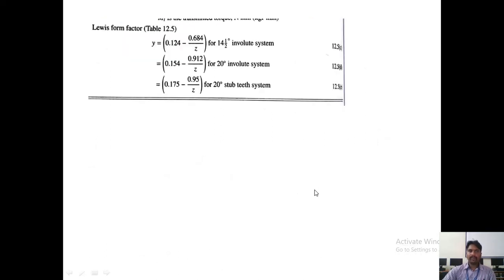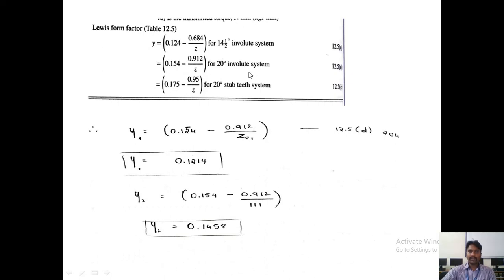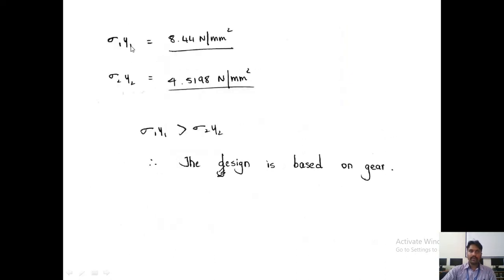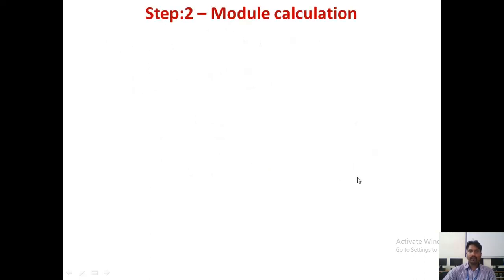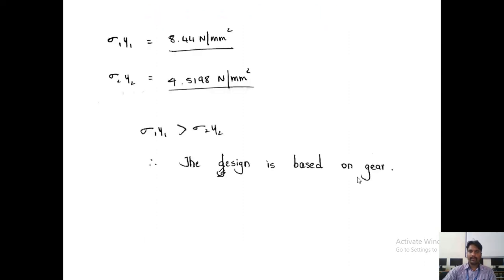Calculate the Lewis form factor using the 20-degree full depth equation: Y = 0.154 − 0.912/Z_e, where Z_e is the equivalent number of teeth. Calculate Y1 using Z1_e and Y2 using Z2_e. Then compute sigma_D1 × Y1 and sigma_D2 × Y2. Since sigma_D2 × Y2 is lesser than sigma_D1 × Y1, the design is based on the gear — the gear is the weaker member.